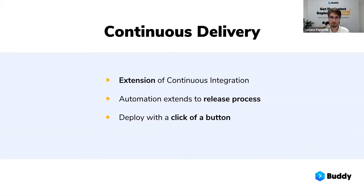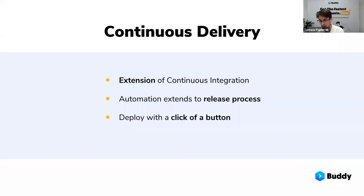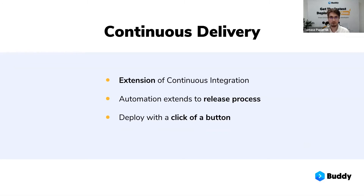Now on to continuous delivery. You can think of continuous delivery as an extension of continuous integration. Continuous integration is all about taking your code, building your application, testing it, and getting these changes integrated into the main line. What continuous delivery does is extend this automation to the release process, so everything gets built and gets ready for your app to be deployed with just a click of a button. And this click of a button — this human element — is very important and crucial to what continuous delivery is.